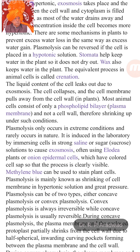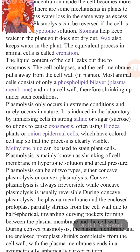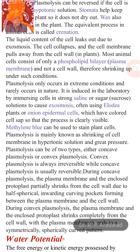Plasmolysis is mainly known as shrinking of the cell membrane in hypertonic solution. Plasmolysis can be of two types: concave plasmolysis or convex plasmolysis. Convex plasmolysis is always irreversible, while concave plasmolysis is usually reversible. During concave plasmolysis, the plasma membrane and enclosed protoplast partially shrink from the cell wall, forming half-spherical inverting pockets. During convex plasmolysis, the protoplast shrinks completely from the cell wall in a symmetrically spherical pattern. That is enough for this lecture. Thank you.